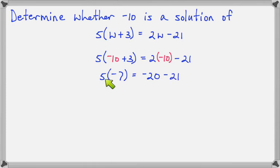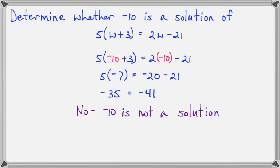2 times negative 10 makes negative 20. Alright, 5 times negative 7 makes negative 35. And negative 20 minus 21 makes negative 41. So would you say that this is a solution of this equation? I would say no because these two numbers are not the same. So negative 10 did not make the two sides equal the same number. So negative 10 is not a solution.